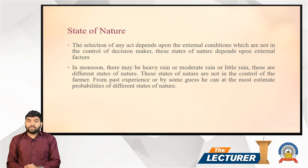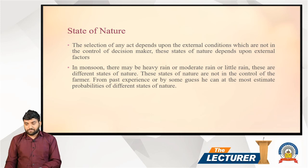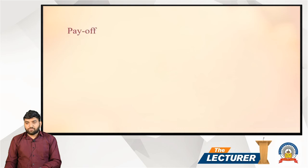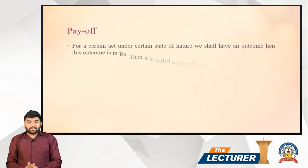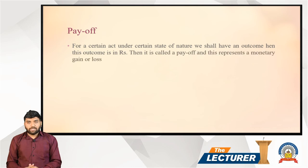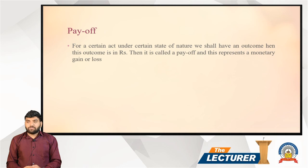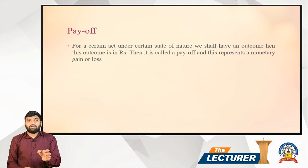The third element is Pay Off. For a certain act under a certain state of nature, we shall have an outcome. When this outcome is expressed in rupees, it is called a pay off. Pay off represents a monetary gain or loss — the outcome measured in rupees, indicating whether there is a gain or a loss.